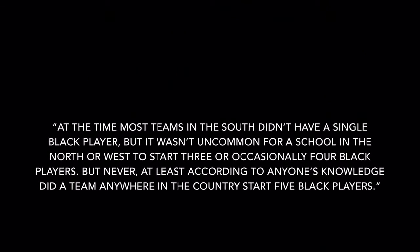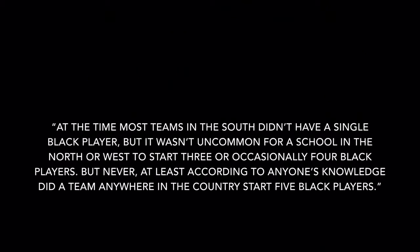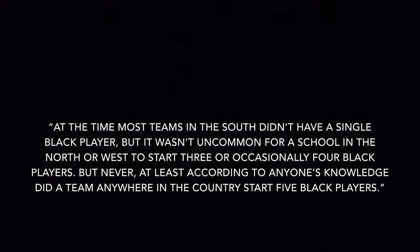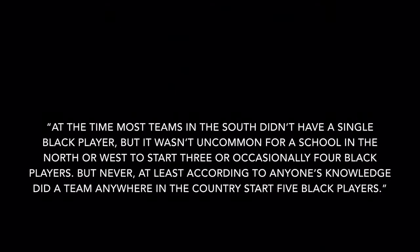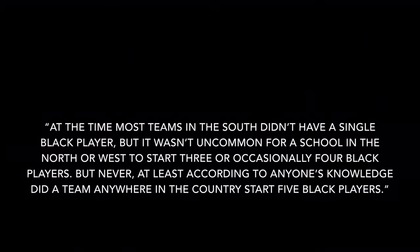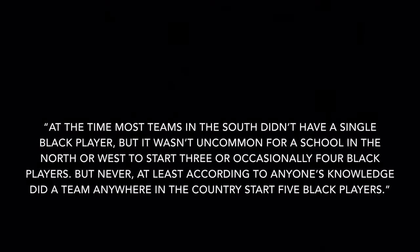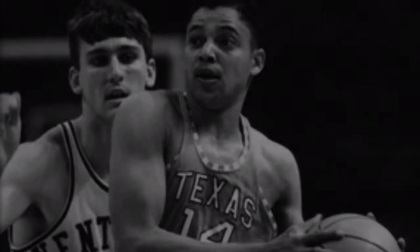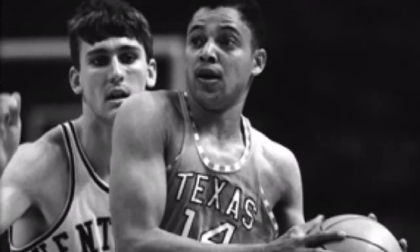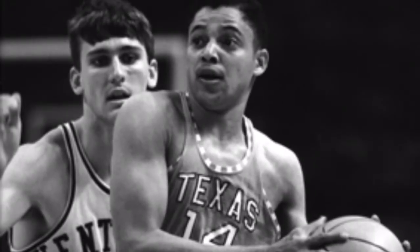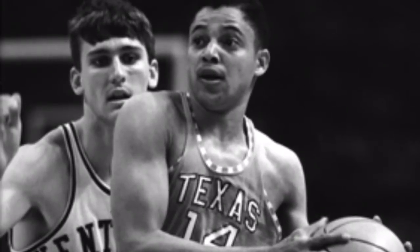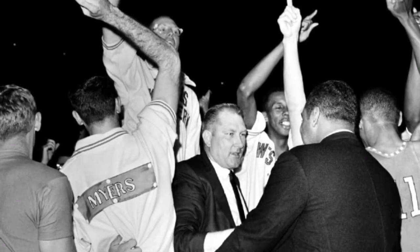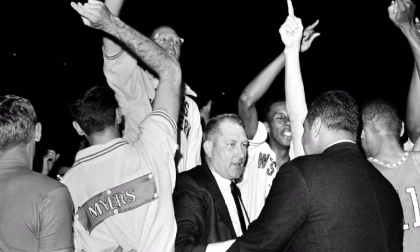Don Haskins wrote that at the time, most teams in the south didn't have a single black player, and while it wasn't uncommon for a school in the north or west to start three or occasionally four black players, never — at least according to anyone's knowledge — did a team anywhere in the country start five black players. Haskins later said he played his best players in order to win, but playing those players sent a clear underlying message: there is no difference between races — white or black, they are still just a player.